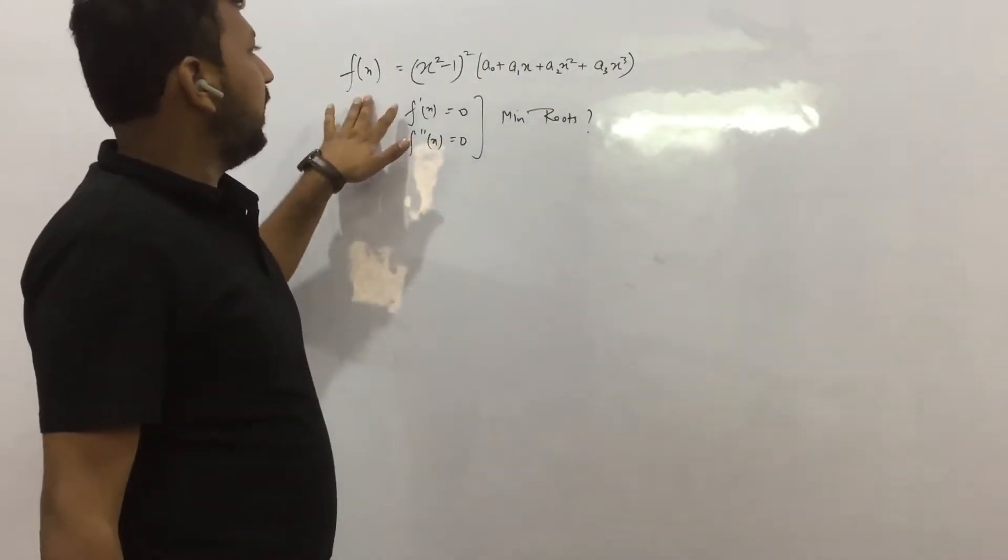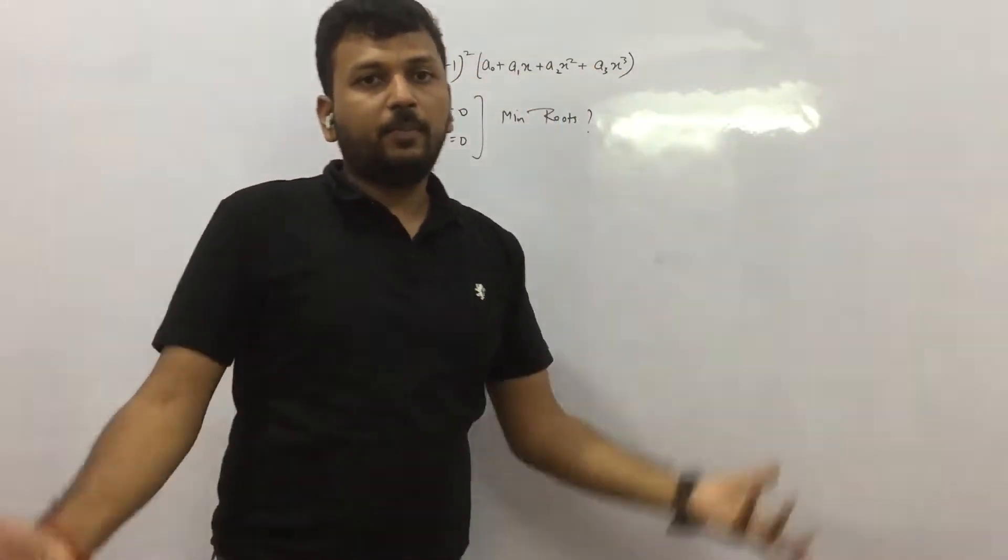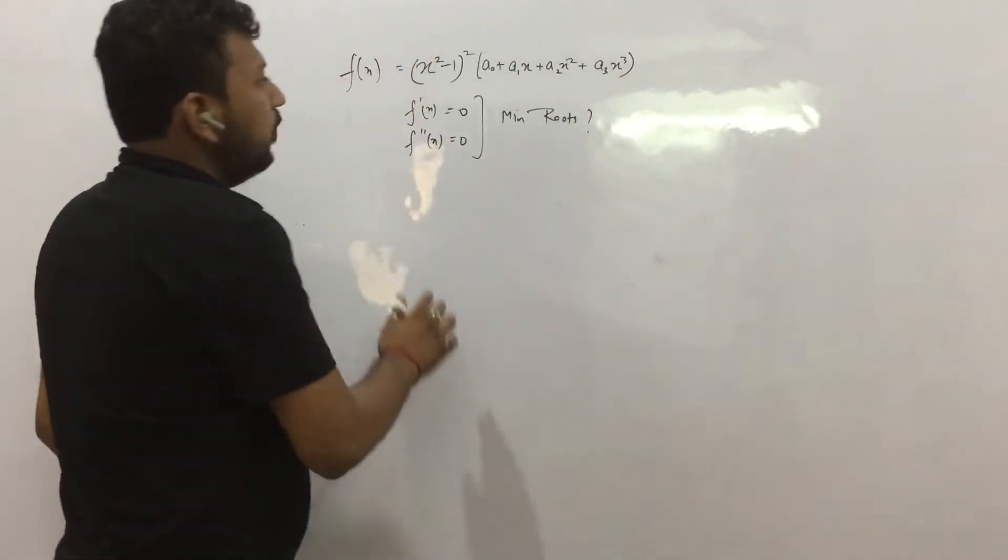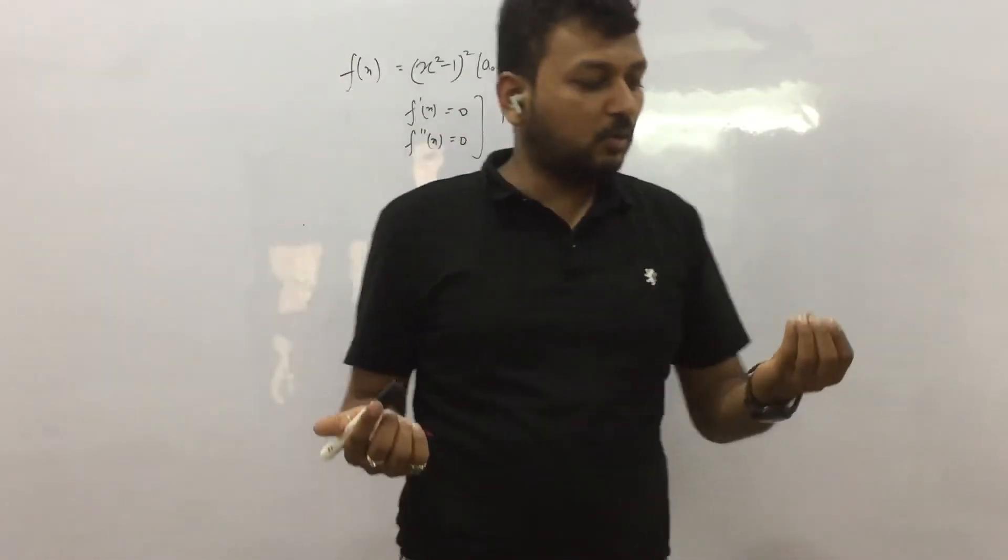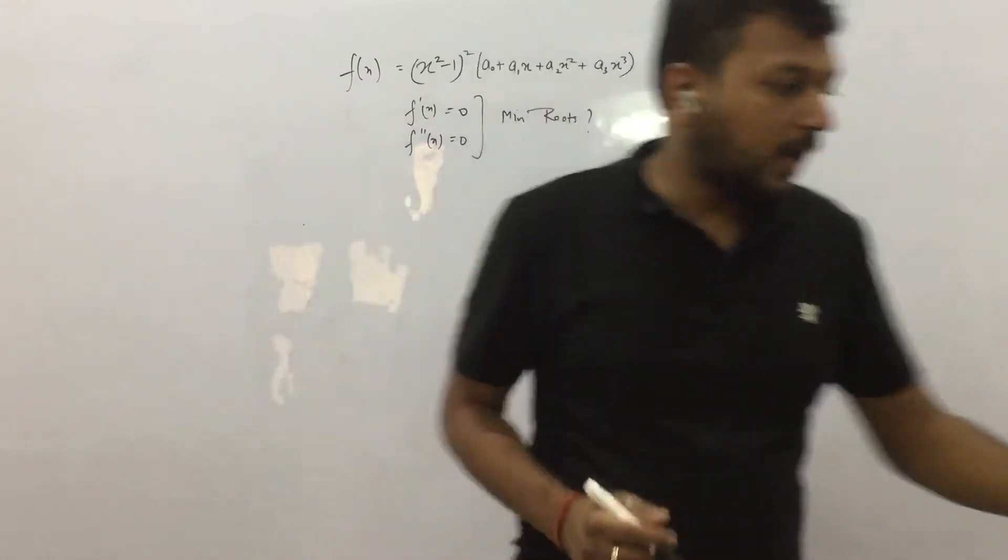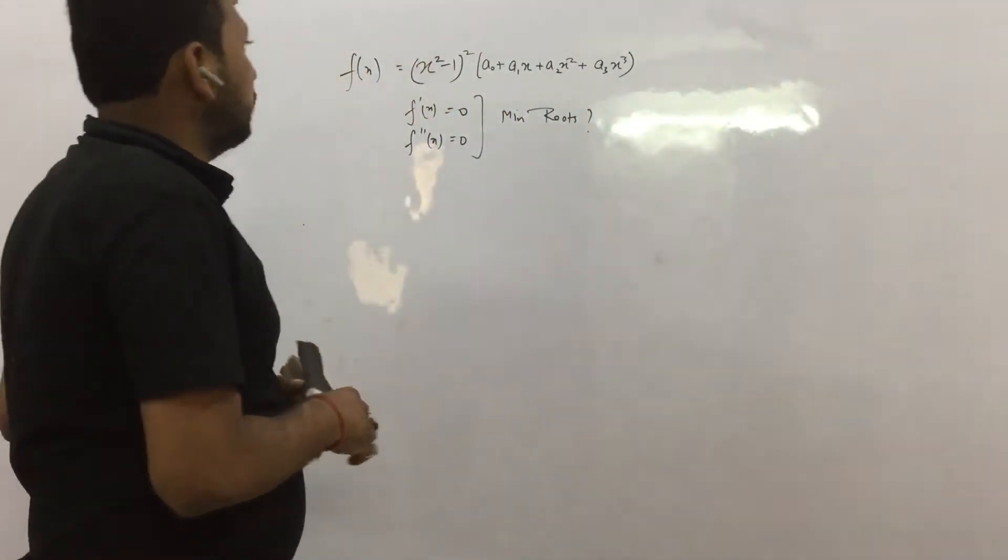So we are given f(x). f(x) is (x² - 1)² into this expression, a polynomial. And we need to find the minimum number of roots of f'(x) = 0 and f''(x) = 0, combined.